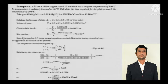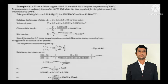Let us talk about this example. A 50 centimeters by 50 centimeters copper slab of 6.25 mm thick has a uniform temperature of 300 degree Celsius. Its temperature is suddenly lowered to 36 degree Celsius. Calculate the time required for the plate to reach the temperature of 108 degree Celsius. Take density 9000.